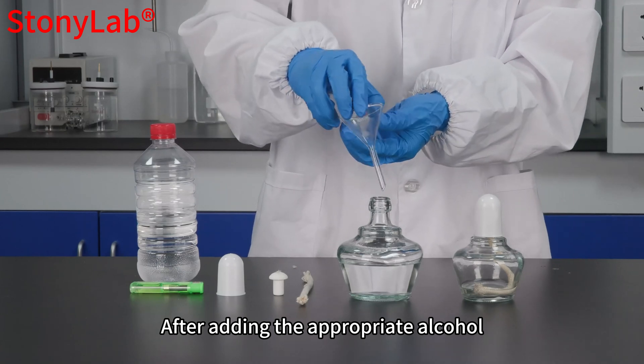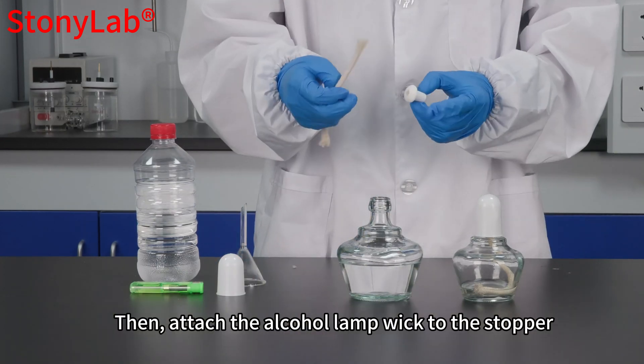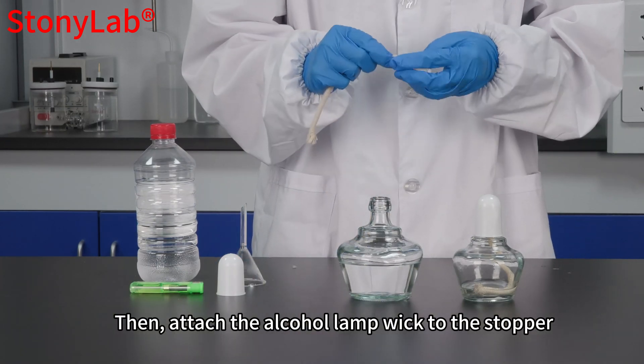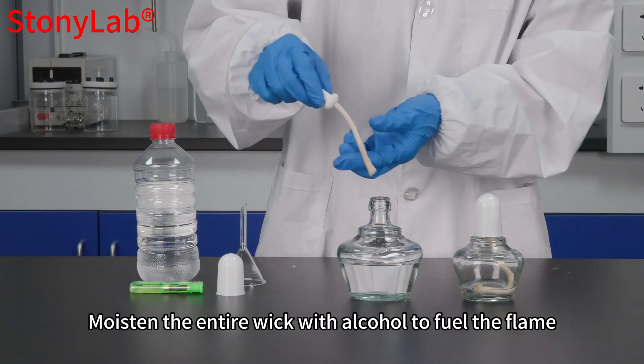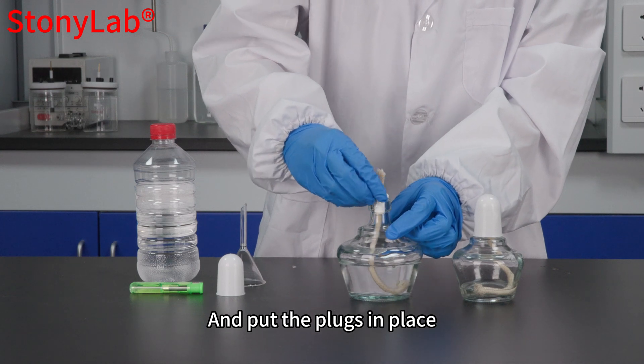After adding the appropriate alcohol, remove the funnel. Then, attach the alcohol lamp wick to the stopper. Moisten the entire wick with alcohol to fuel the flame, and put the plugs in place.